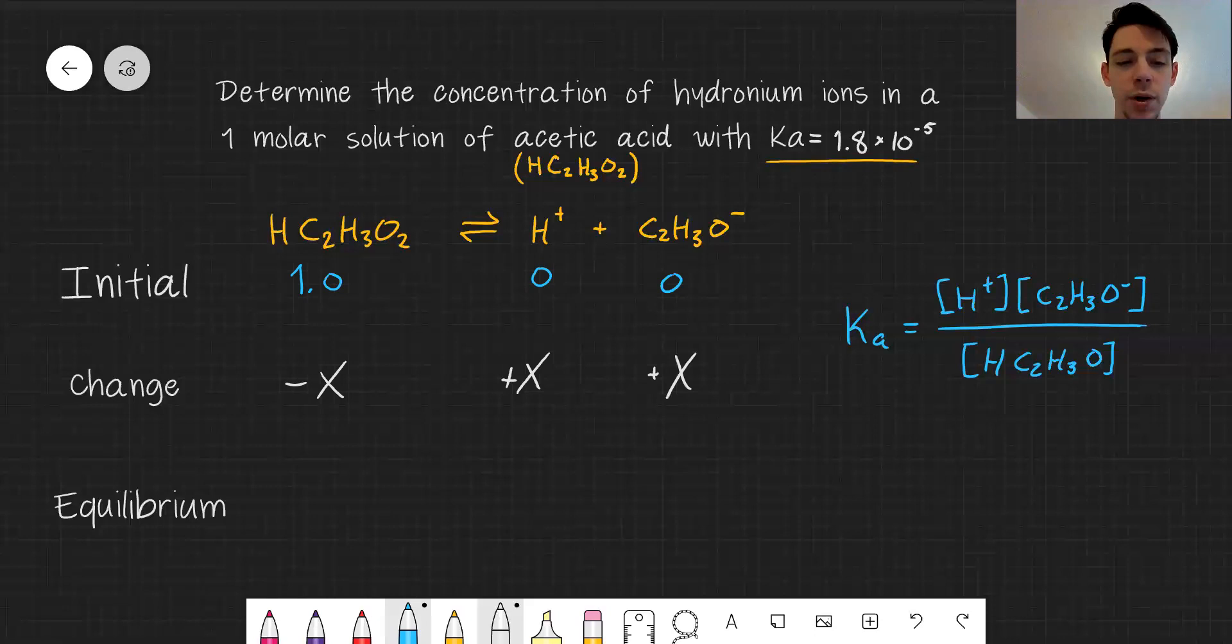So our final equilibrium values will be 1 minus X for acetic acid, X for hydronium, and X for our acetate.